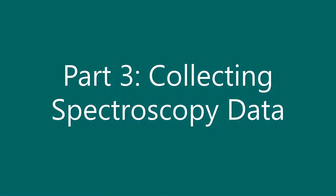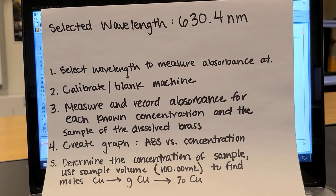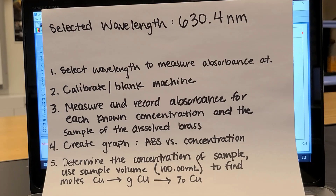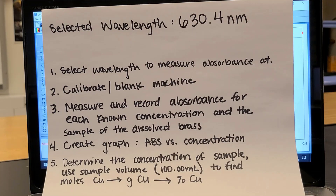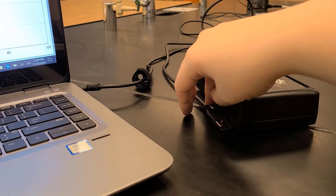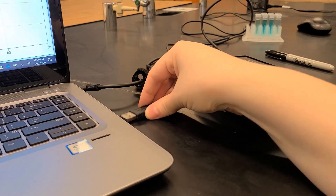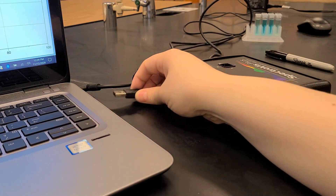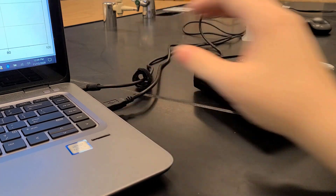We're going to select 630.4 nanometers as our measurement wavelength and measure the absorbance there. We need to calibrate and blank the machine, then measure and record absorbance for each known concentration and for the dissolved brass sample. We'll make a graph of absorbance versus concentration and use that graph to determine the concentration of copper in the sample.